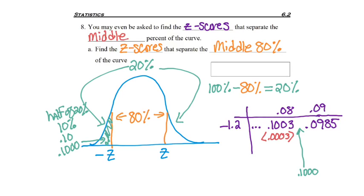The .1003 number is basically three units away. The .0985 is 15 units away. So we want to go with the closest distance, which is only three units away.